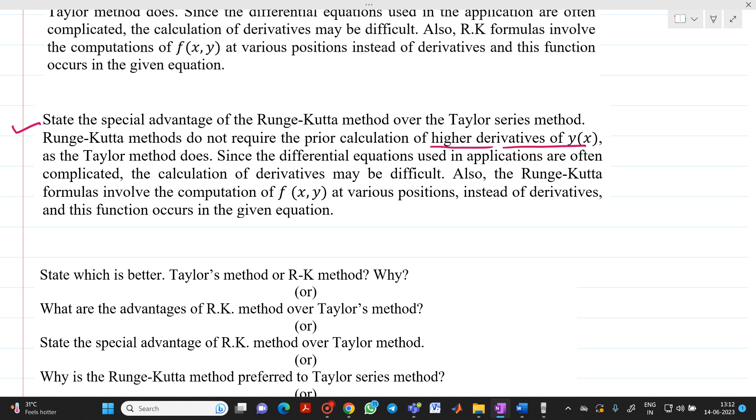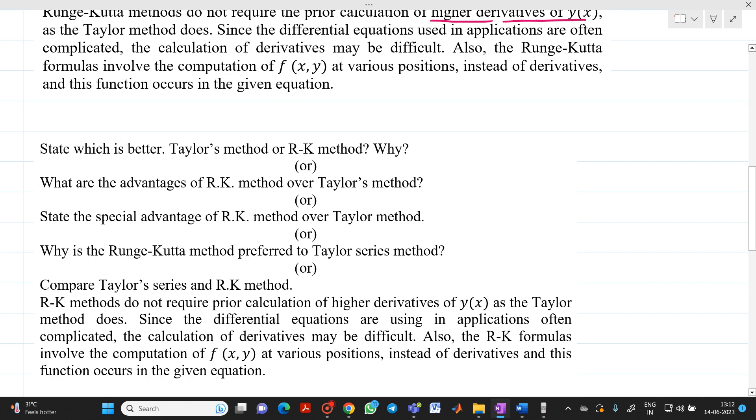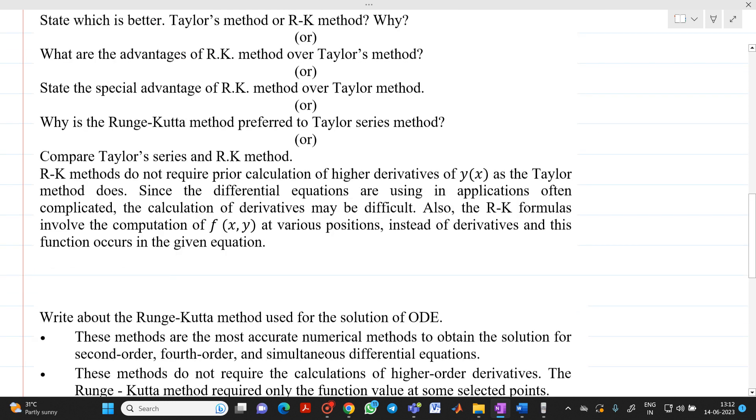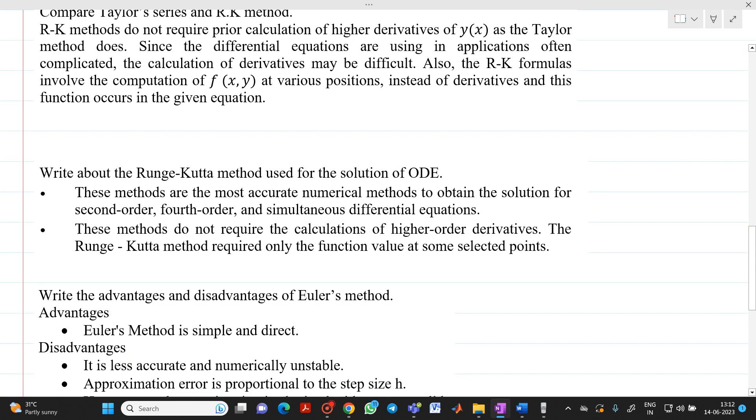This was the demerit of Taylor series method, but this is the advantage of RK method. Again, if the same question is asked comparing Taylor series method, then in the same way, you have to give the answer. Now, if the question is asked, what are the advantages of Euler's method?